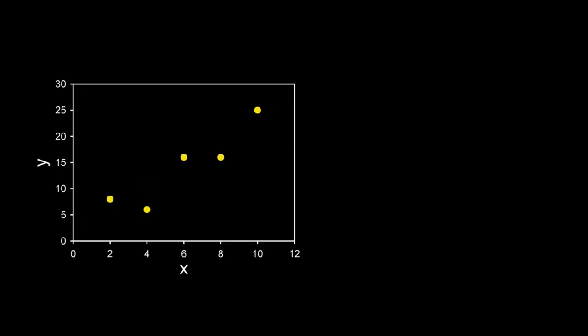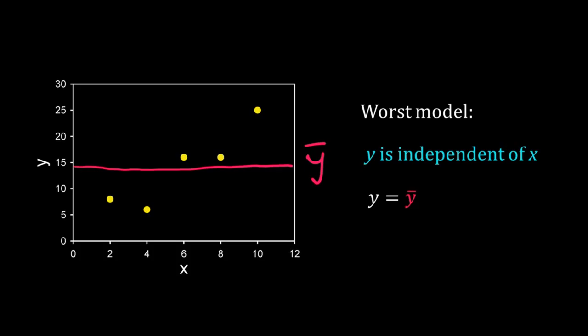Here I have five data points. Let's assume a model that is very bad. Our worst model is that y is independent of x, that means y is equal to a constant. The constant can be anywhere, but to make our worst model meaningful, let's assume y is equal to the average, so y is equal to ȳ.